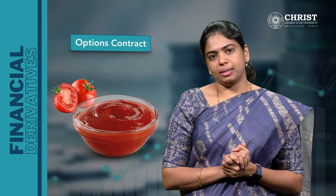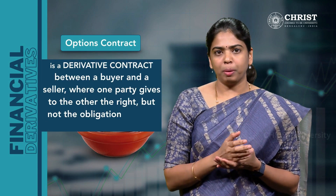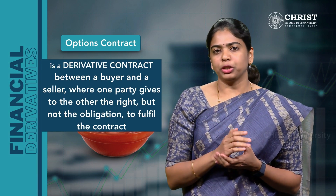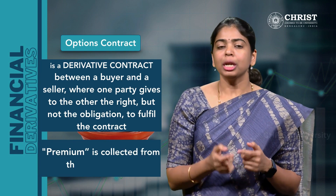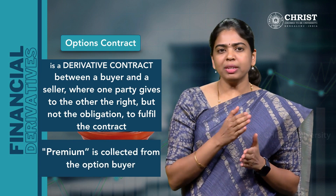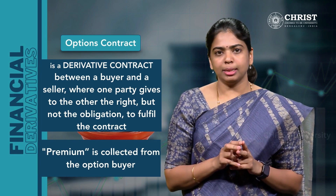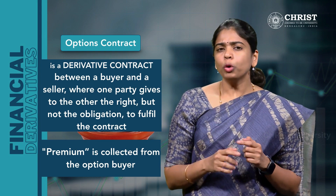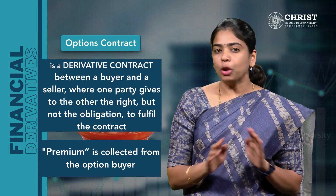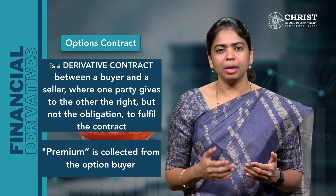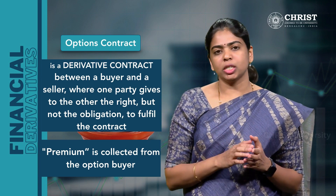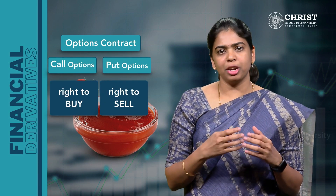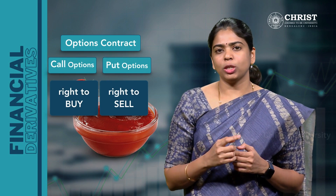Now let's move on to options. An option is also a derivative contract between two parties — a buyer and a seller — where one party gives the other the right but not the obligation to fulfill the contract. In return for granting the option, a premium is collected from the option buyer. In futures contracts, both the buyer and seller are obliged to fulfill the contract. But if the parties want to fulfill the contract only if the situation favors them, and not fulfill it if the situation is not favoring them, then they should enter into an option contract instead. There are two types of options: a call and a put option. A call option gives a right to the buyer of the underlying asset, while a put option gives a right to the seller of the underlying asset.